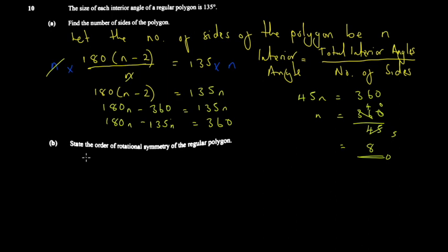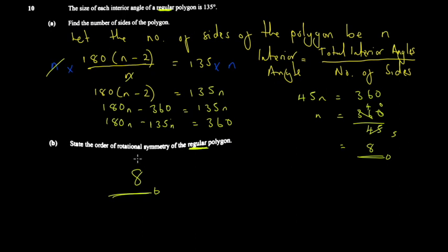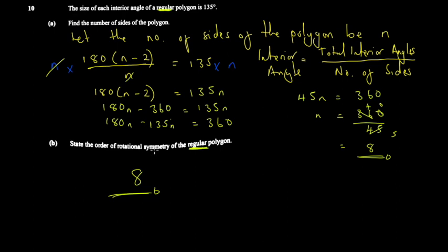The question also asks to state the order of rotational symmetry of the regular polygon. A regular polygon has equal sides and equal angles. Any regular polygon has an order of rotational symmetry equal to its number of sides. So the answer is 8. For example, a decagon would be 10, an equilateral triangle would be 3, and a square would be 4. This applies only to regular shapes.